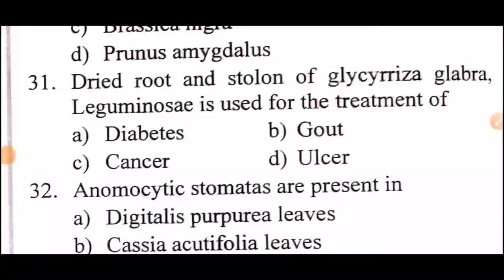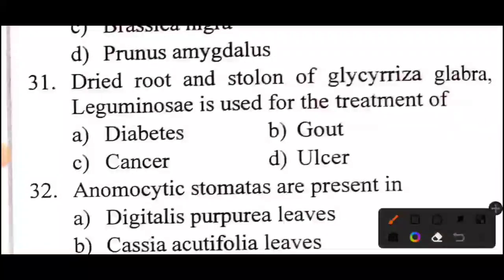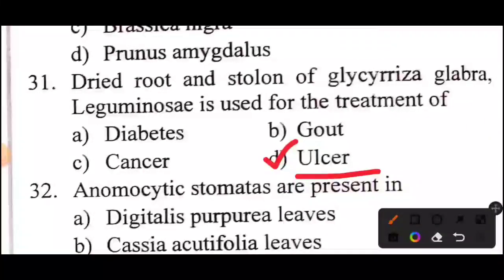Question 31 of 60: The dried root and stolen of Glycyrrhiza glabra (Leguminosae) is used for the treatment of? Answer is Option D.